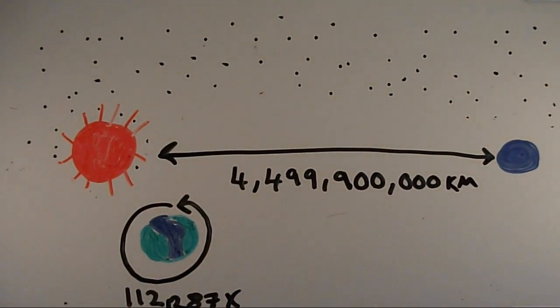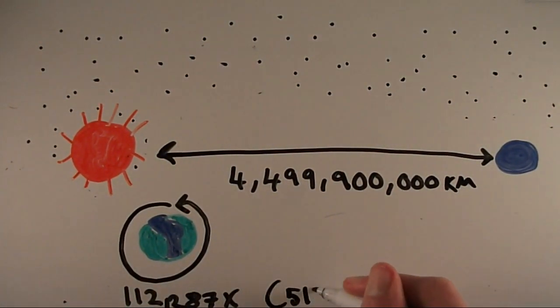In fact, if you were to drive that distance in a car going 100 kilometers per hour, it would take you 5133 years on average.